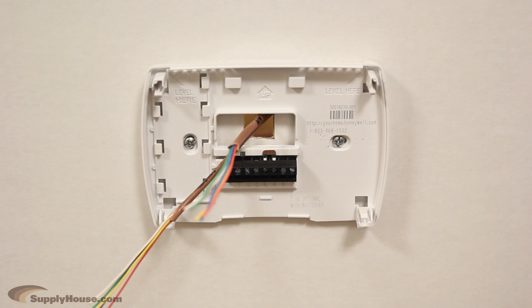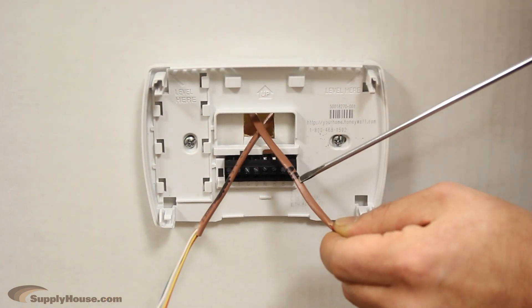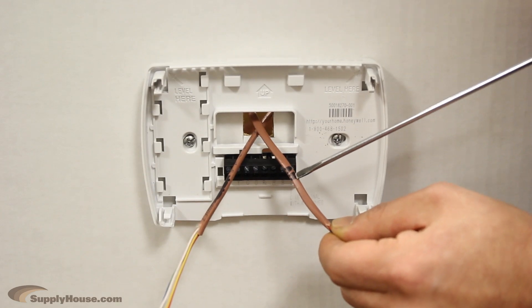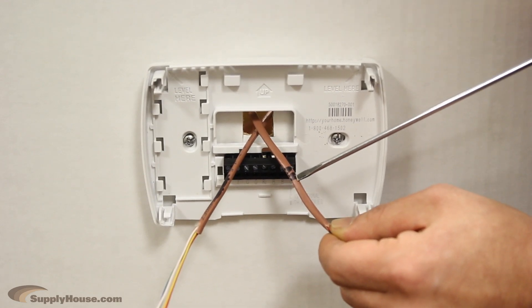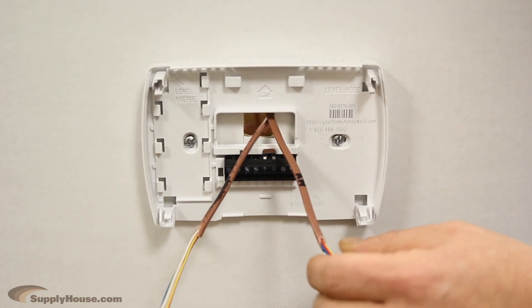Next, open up your thermostat and attach the back plate to the wall. Verify the wires and identify which are for heating and which are for cooling if that applies. Luckily, ours have labels. If yours do not, you may need to use a toner.